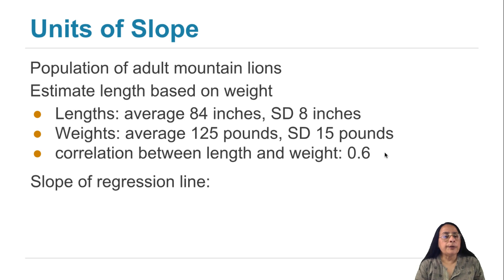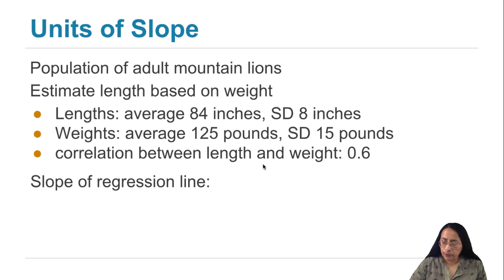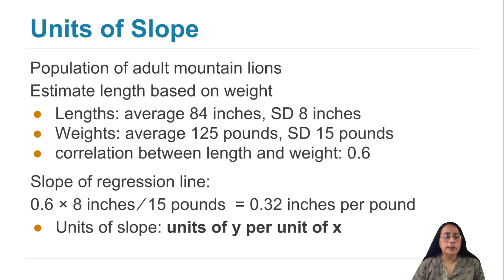The slope of the regression line is r times the SD of y divided by the SD of x, where y is what we are trying to predict—that's length. So the slope of the regression line is 0.6 times 8 inches divided by 15 pounds, which works out to 0.32 inches per pound. In general, the units of slope are units of y per unit of x.